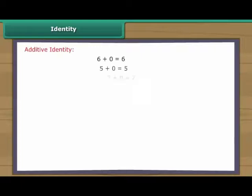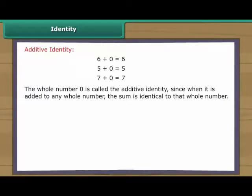Identity. The whole number 0 is called the additive identity. Since when it is added to any whole number, the sum is identical to that whole number.